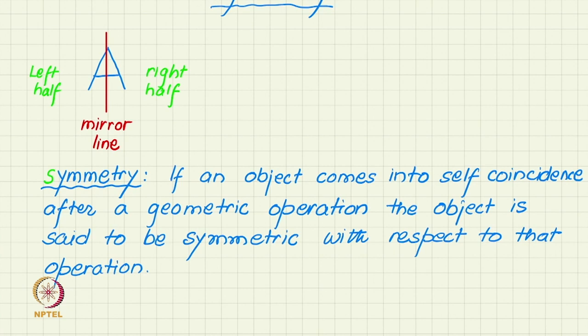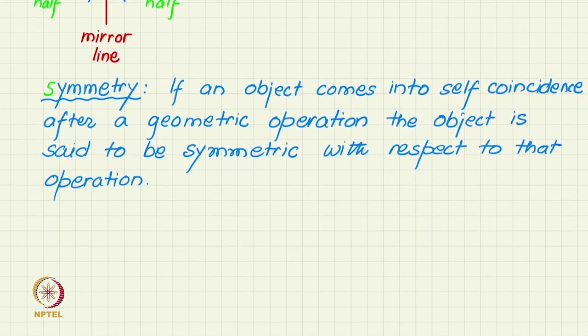This is a very general definition of symmetry. We have seen an example of the letter A. Let us explore other letters of the English alphabet. Letter A we have already seen has a vertical mirror.